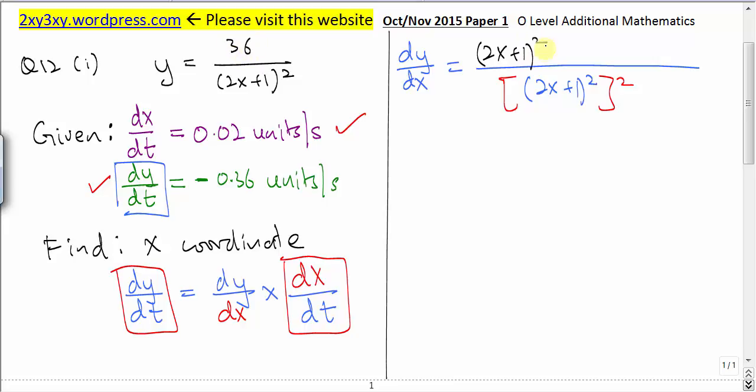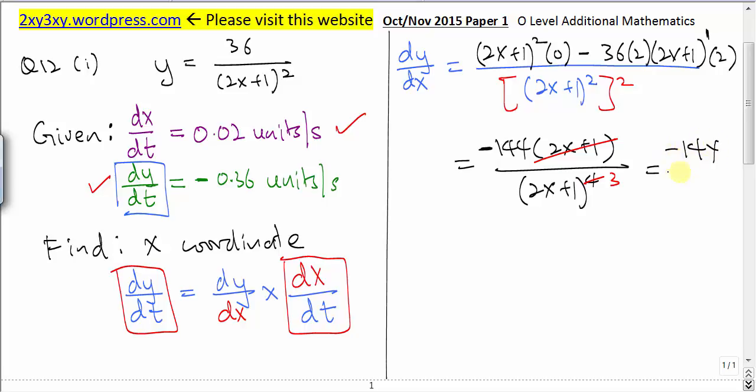Keep the below expression and differentiate the top expression. This is a constant, differentiate constant gives 0. Minus away. Keep the top expression and differentiate this expression using chain rule. Bring down the power, power minus 1, differentiate inside the bracket gives 2. Simplify to get negative 144 divided by (2x+1) to the power 3.